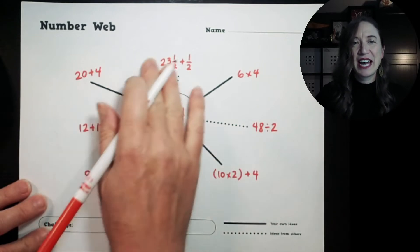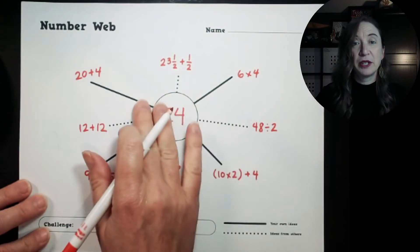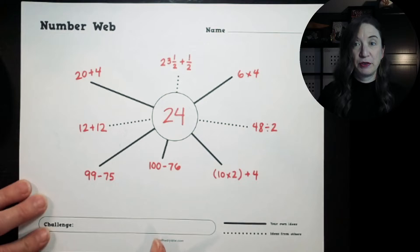So this is how I would do a basic number web. Remember, five of them are my own and three come from friends of mine.